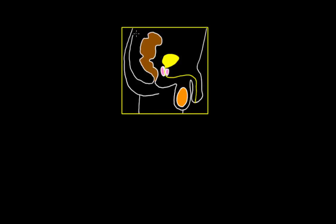Let's say we have this gentleman right here and I've drawn out his genitalia. This is the penis, the testicle, the prostate, the bladder, and the rectum above the anus. And we suspect that they might have chlamydia — they may have contracted chlamydia. How would we go through and diagnose that?